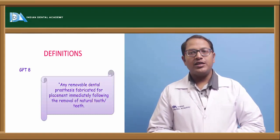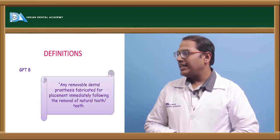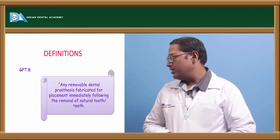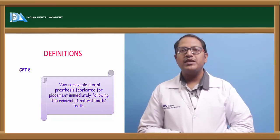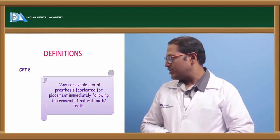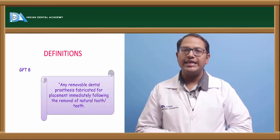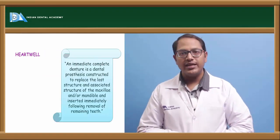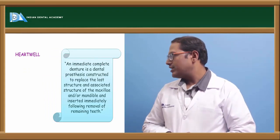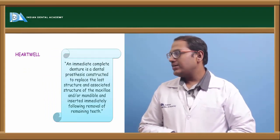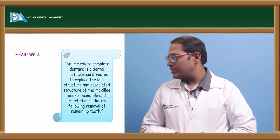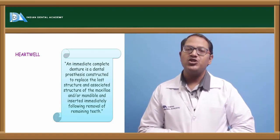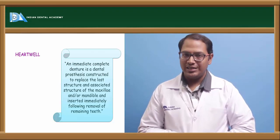Coming to the definition, according to GPT-8, it says any removable denture, complete or partial, fabricated for the placement immediately after the extraction or removal of the natural teeth or tooth. That is how Hartwell defines an immediate denture to be a partial or a complete denture constructed to replace the lost structure and associated structure of maxilla and mandible immediately after an extraction of a tooth.